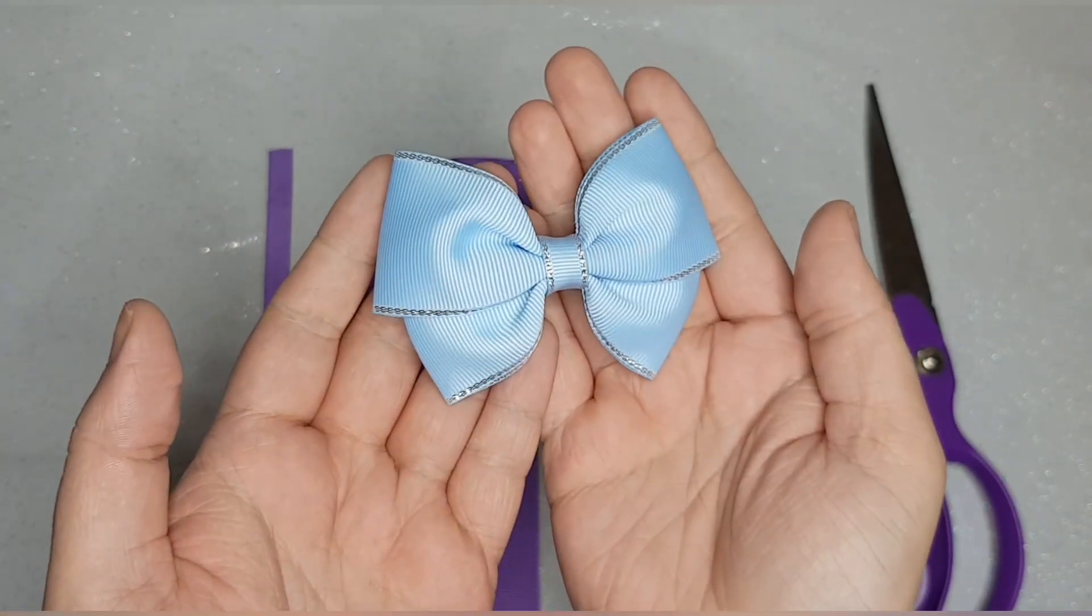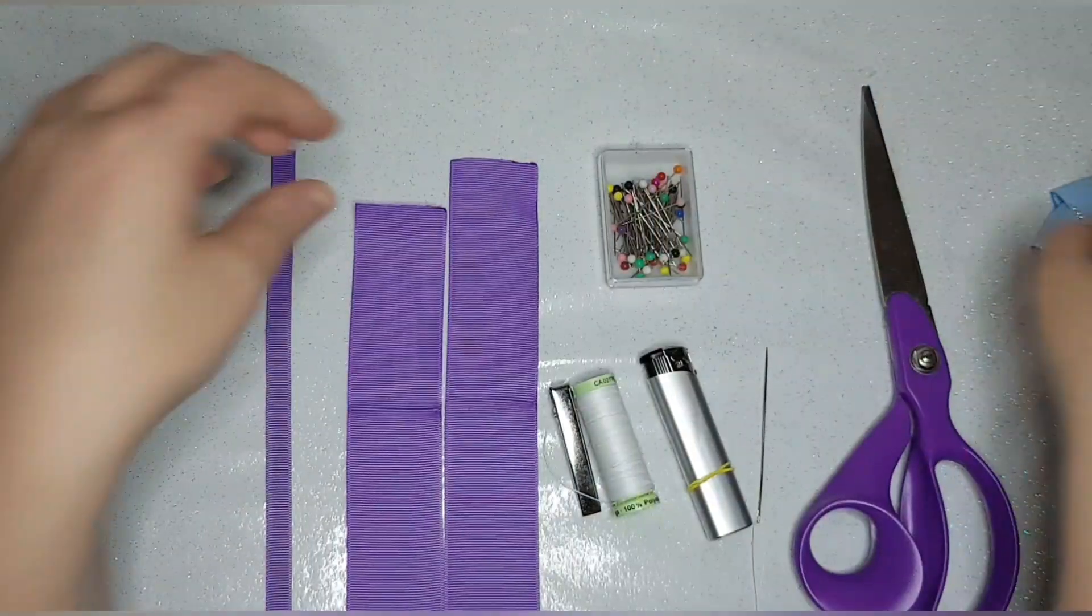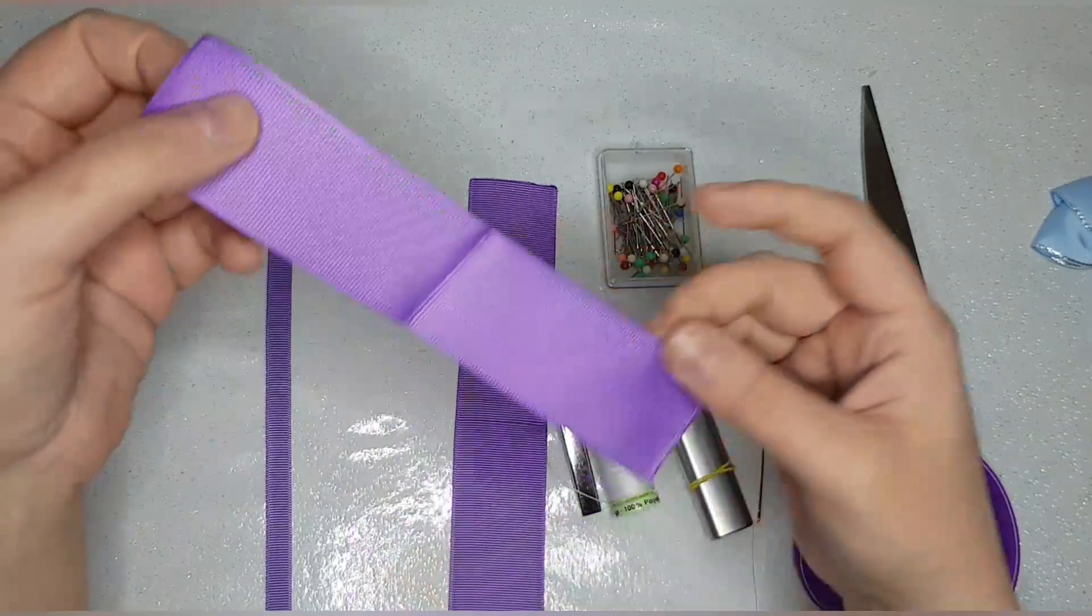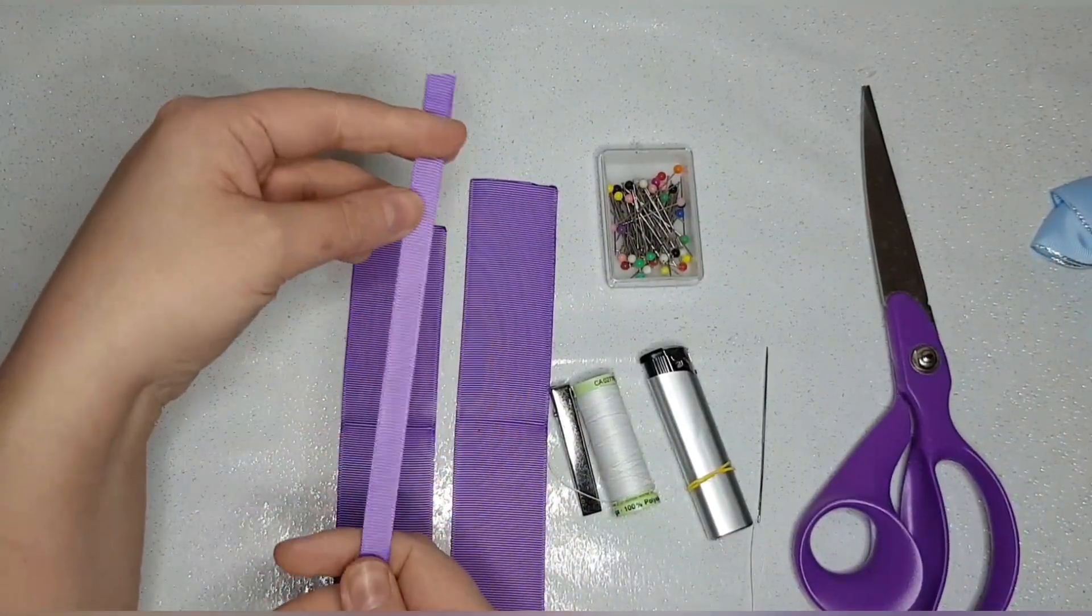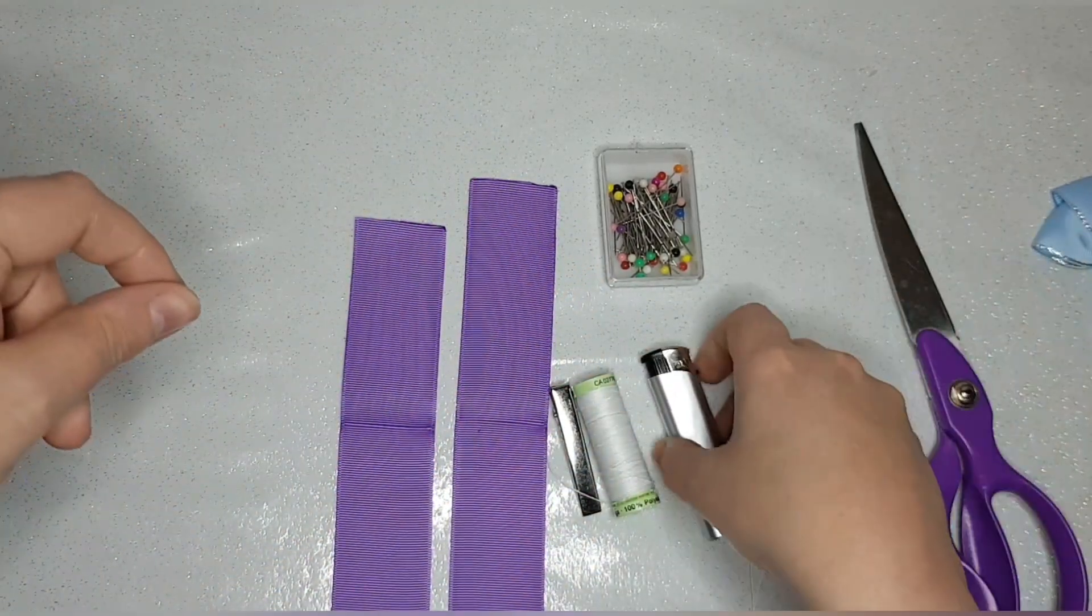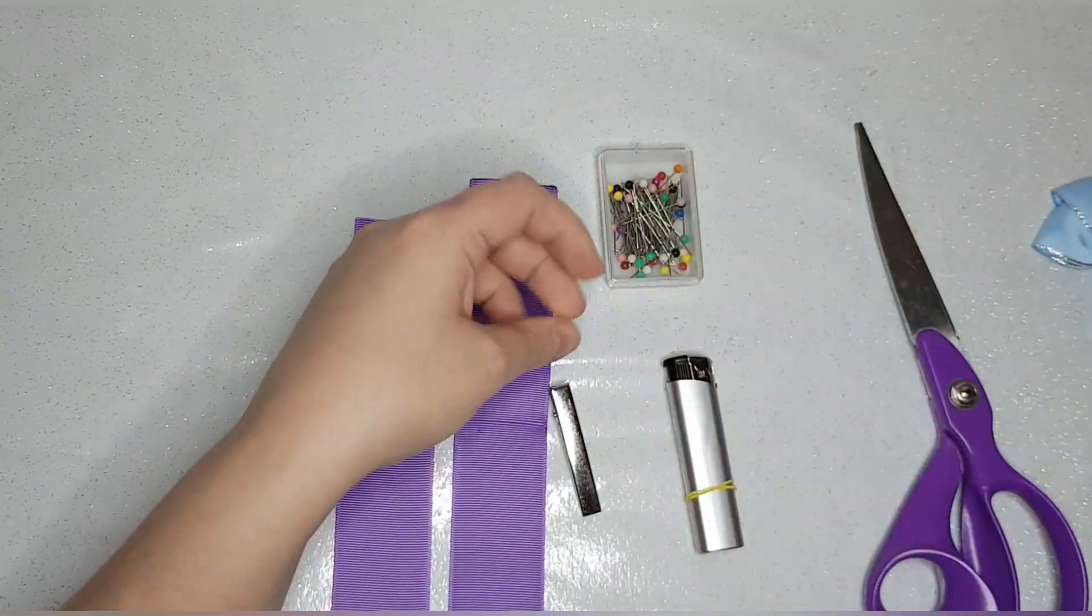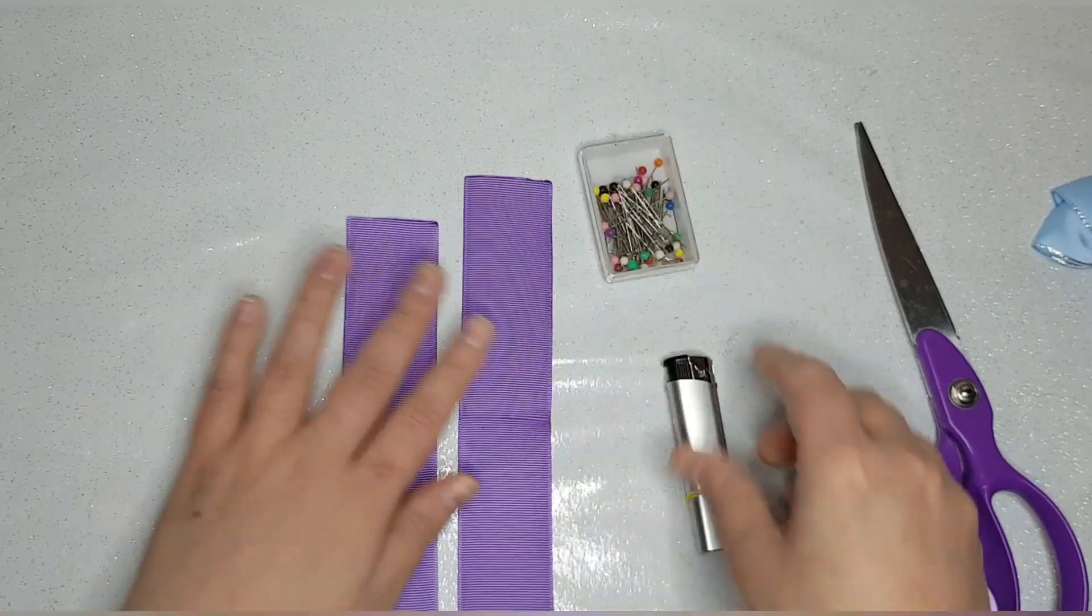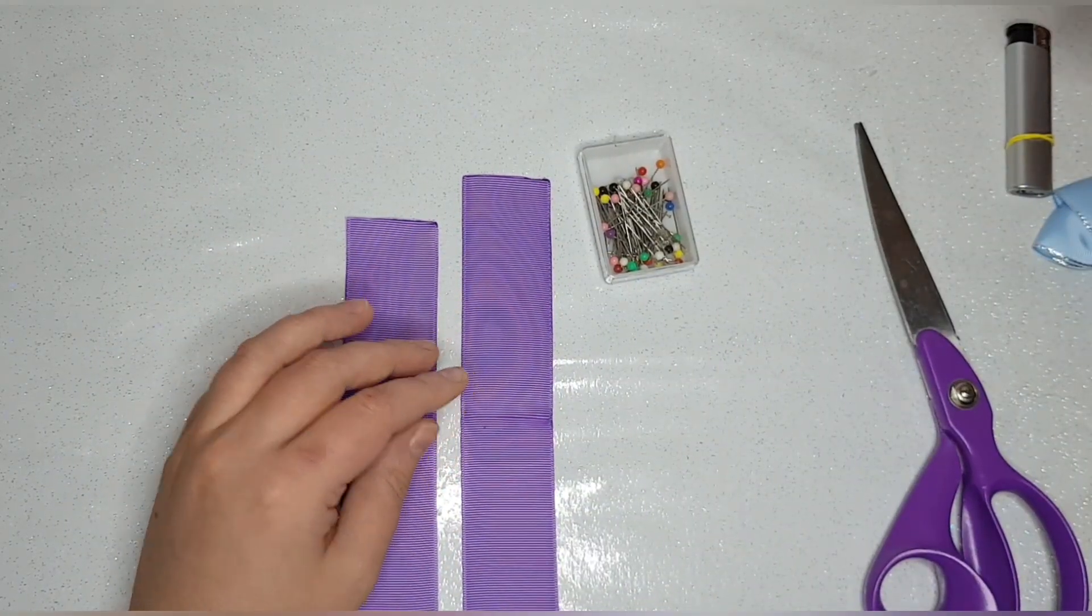This one is in 1.5 inch ribbon and you'll need two pieces, one eight inches and one seven inches, and then obviously a 9mm ribbon for the center. I've got my scissors to cut, lighter to heat seal, extra strength thread, needle, clip to attach it to, some pins to hold everything in place.